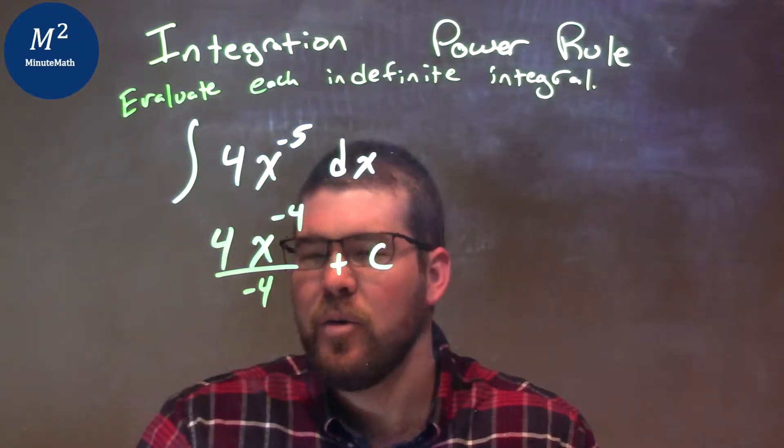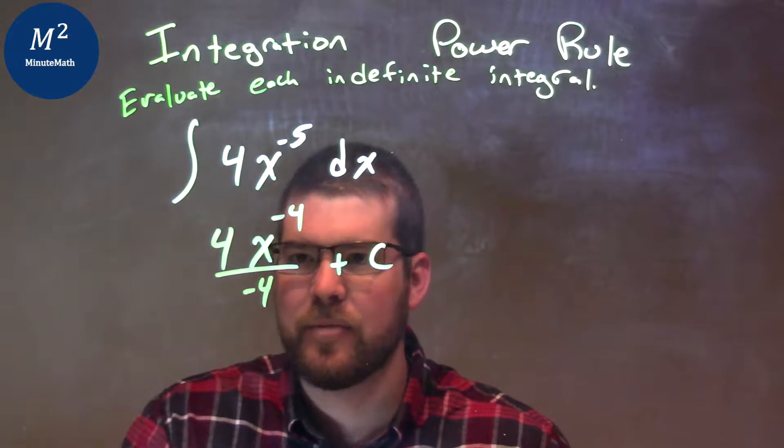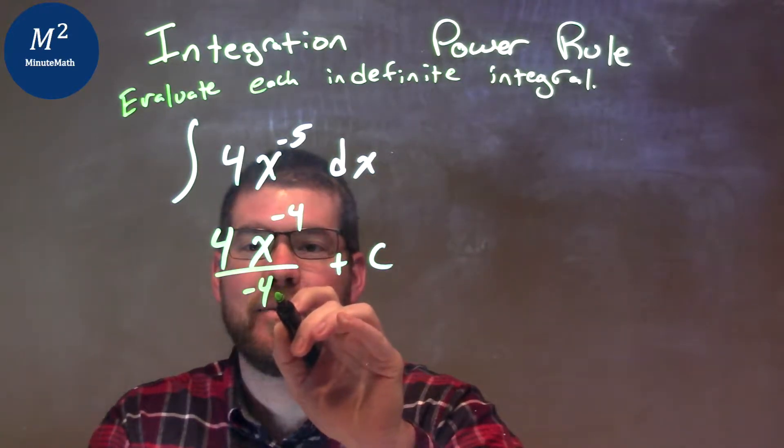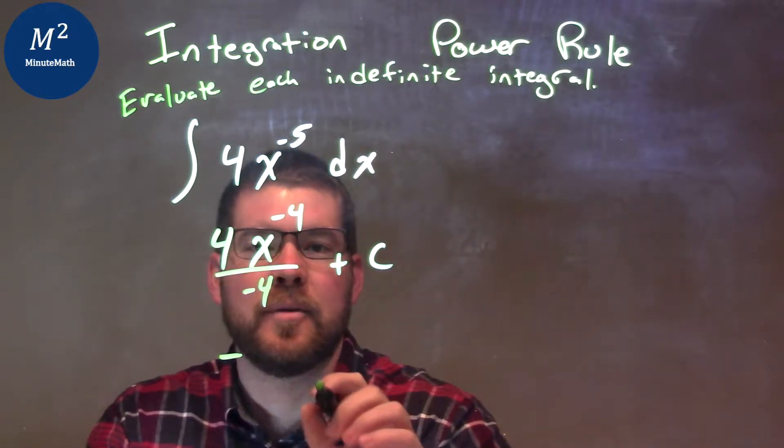So now we've taken the integral, but we can simplify this a bit. 4 divided by negative 4 is negative 1, so we have a negative out front.